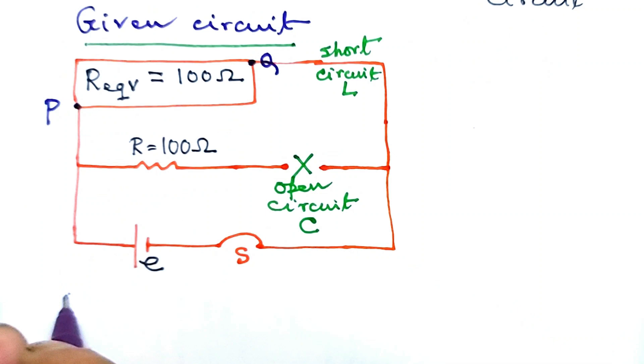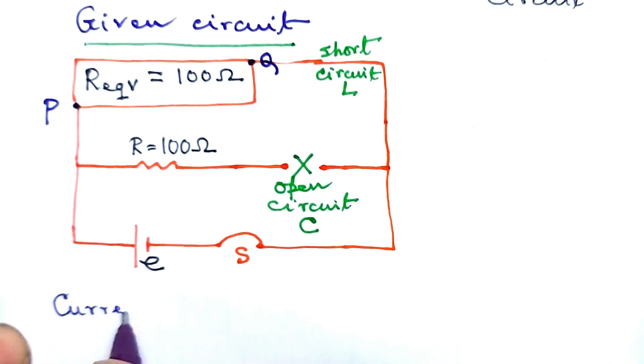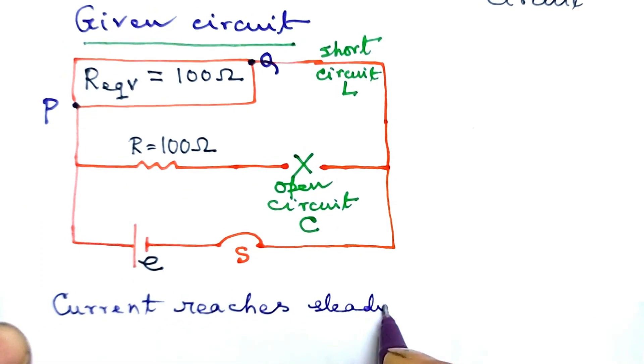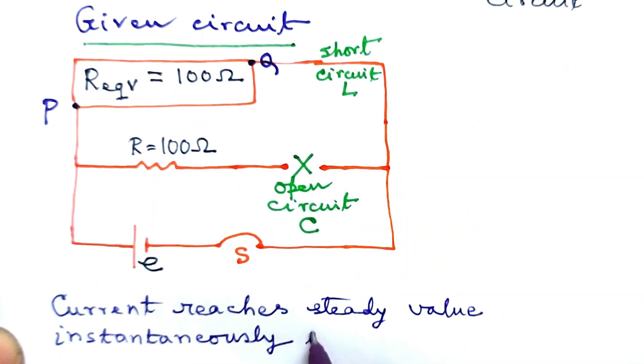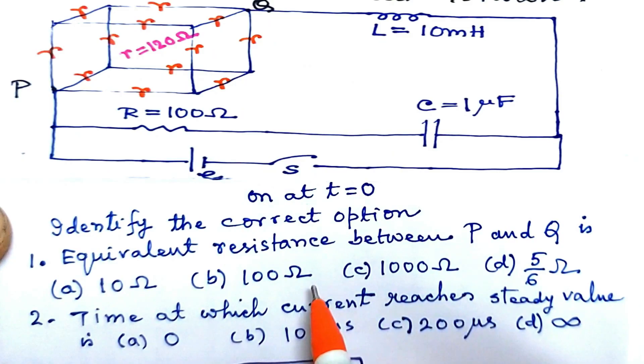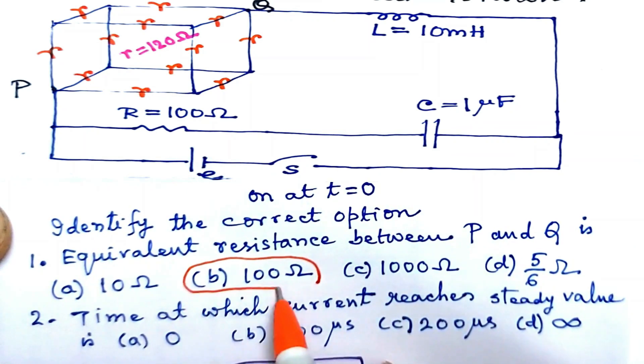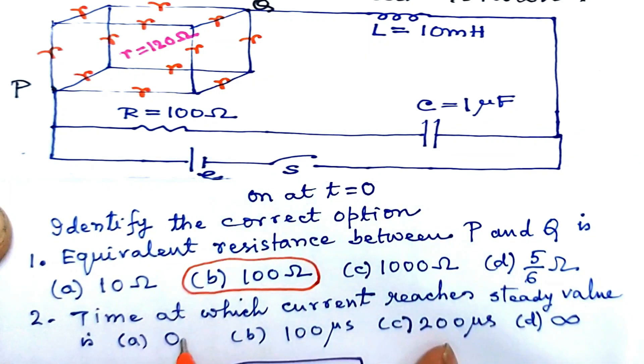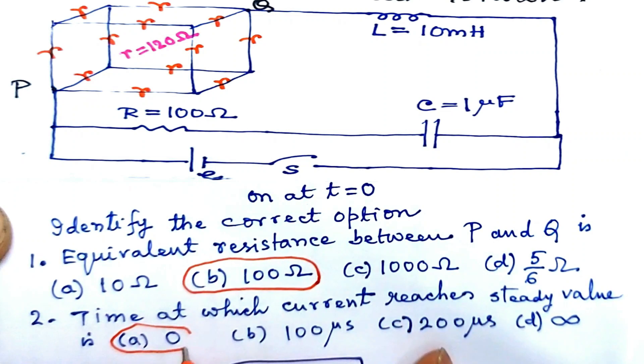Clearly thus current reaches steady value instantaneously at t equal to 0. So in question one, option b is correct, and in question b, option a is correct. Thank you.